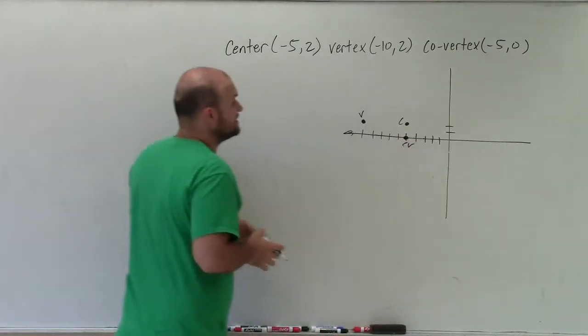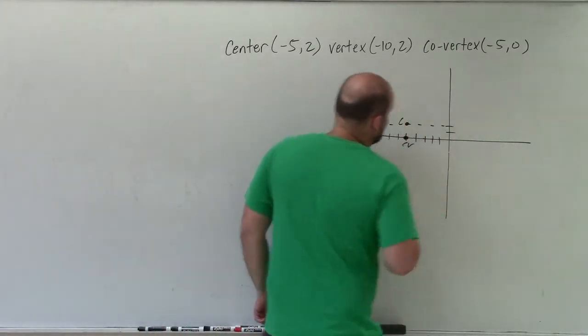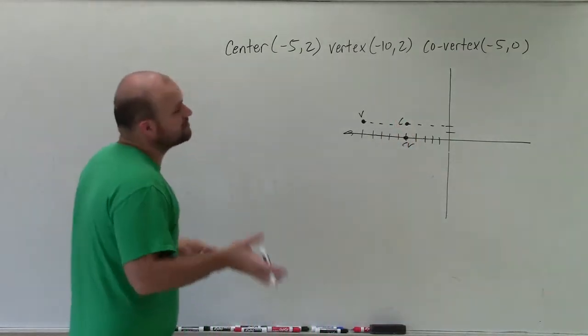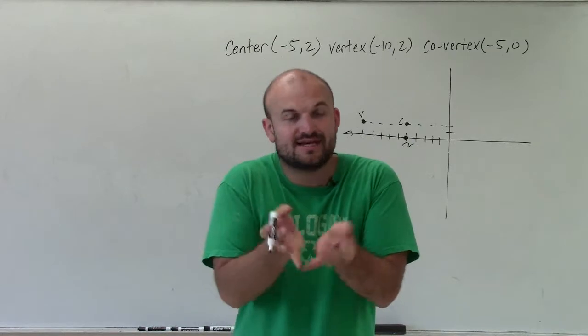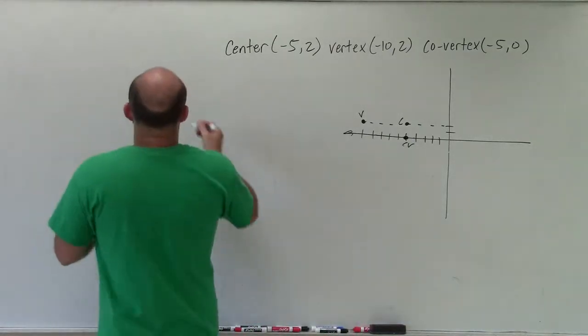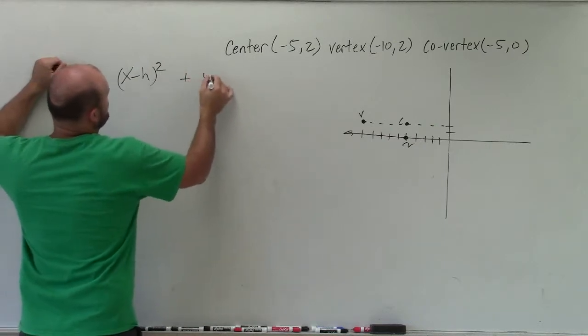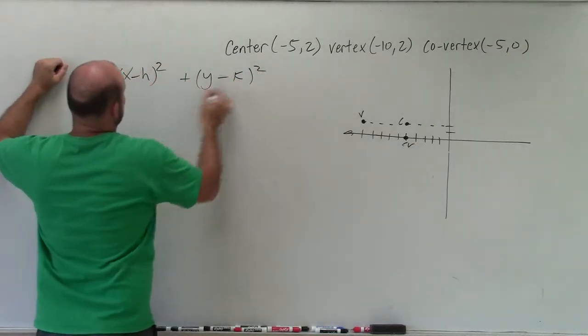Now remember, I said that the vertices and the center all lie on this major axis. So therefore, the major axis has to be horizontal. And that's huge, because when you have a major axis that's horizontal, that means your a, which I'll talk about in a second, is going to be under the x. So what I'm pretty much describing is there's two different types of equations for an ellipse.